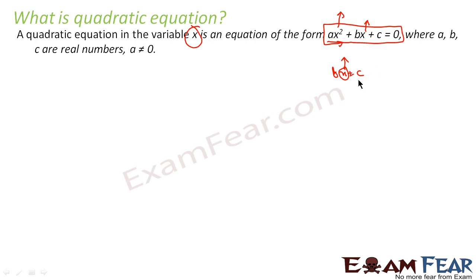A quadratic equation is an equation where the highest power is two. Here, if you see, the highest power of x is two. Thus, a quadratic equation in variable x is of the form ax² + bx + c = 0, where a, b, c are real numbers and a should not be equal to zero.